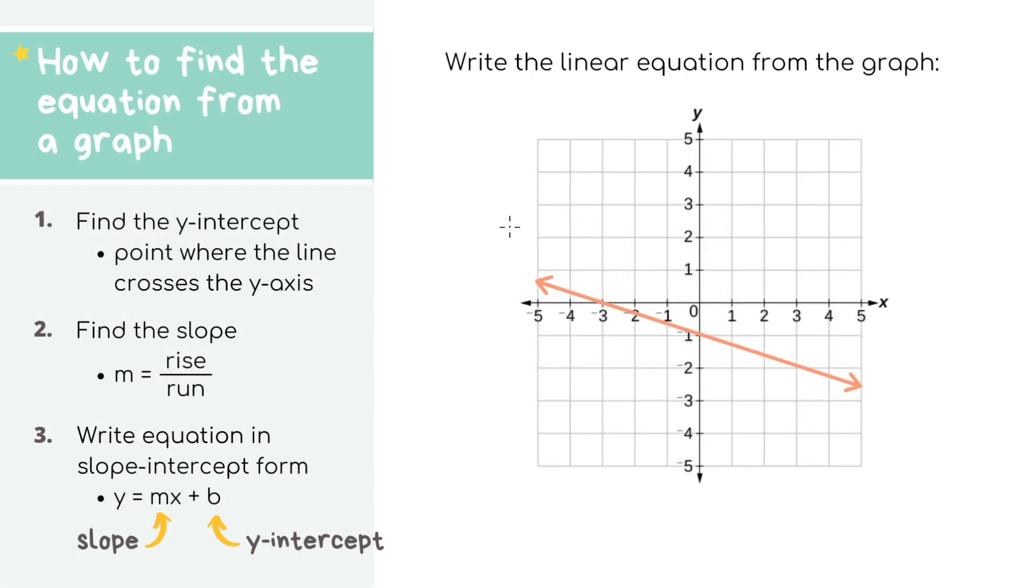We'll go through the same process for this graph. Step one is to find the y-intercept, which is again where the line crosses the y-axis. In this graph, that point is 0, negative 1. That means our y-intercept, or b, equals negative 1.